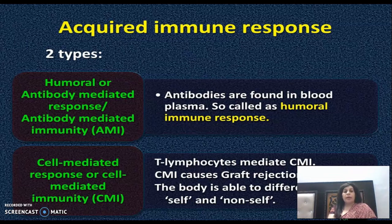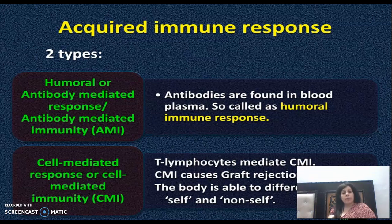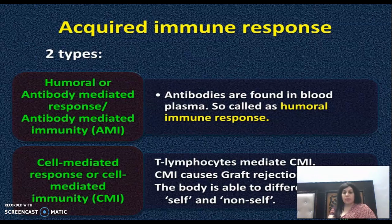Immune response दो types का होता है: Humoral antibody-mediated response, जिसमें antibodies plasma में होती हैं इसीलिए इसे humoral immune response कहते हैं, और cell-mediated immunity (CMI) जो T lymphocytes द्वारा carry out होती है। जहाँ graft transplantation होती है, body tissue matching के basis पर यह differentiate करती है कि suit करता है या नहीं। यह action T lymphocytes करते हैं क्योंकि body self और non-self के बीच differentiate करती है।